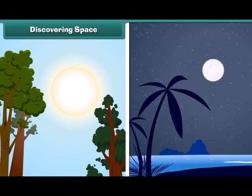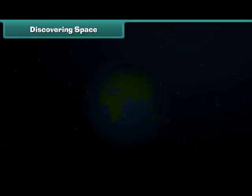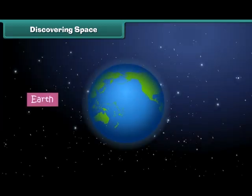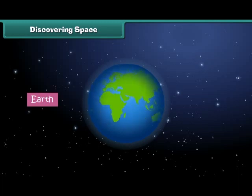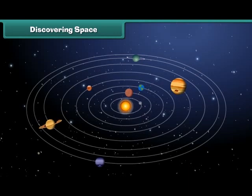Discovering space: The sun, moon, and the stars that we see in the sky are all located in space. The Earth on which we live is also in space. Everything from the small dust particle to the large planet is placed in space.